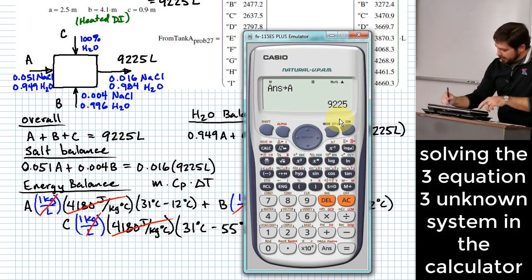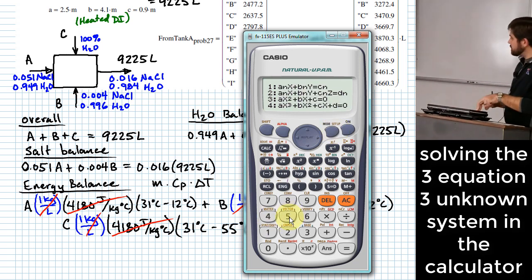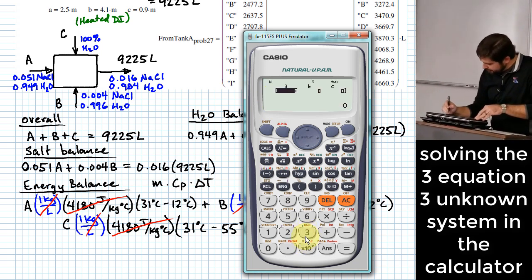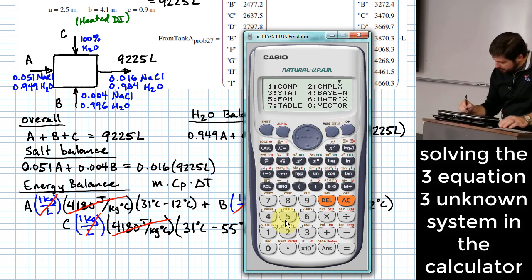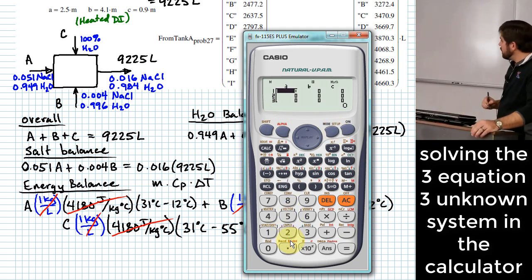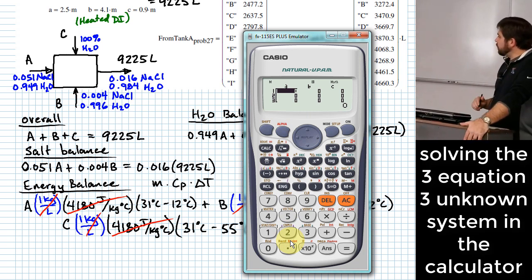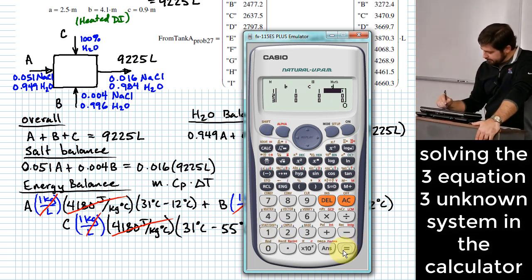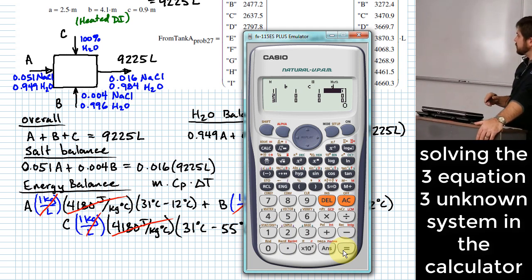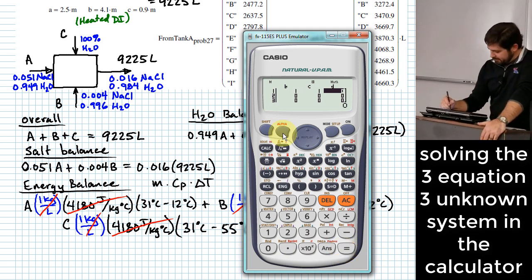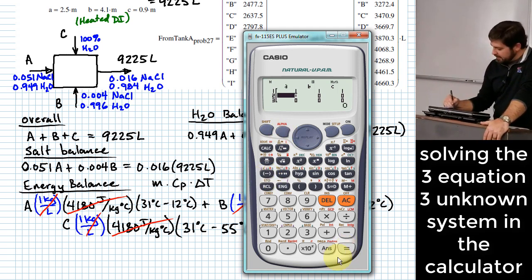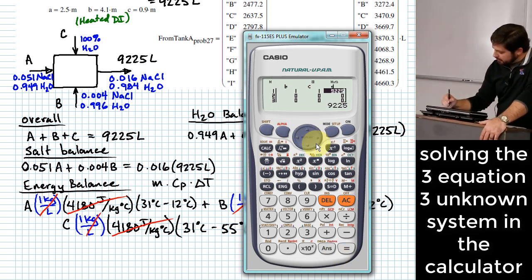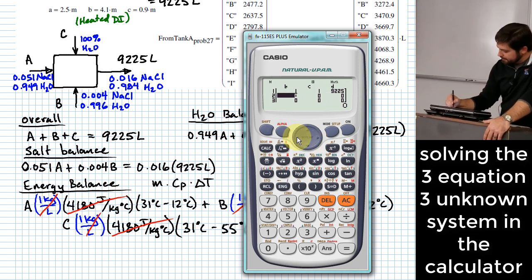So we'll go into the equation solving tool in the calculator. We're going to do a three by three. Mode five, two. There we go. And for the first equation, we have coefficients of one all the way across. And what do we have for the term on the right-hand side? We actually had that stored in A. So I can just put in, it's 9225 liters, but I had that value stored in A. So you see here, it's got 9225 there in that slot now.